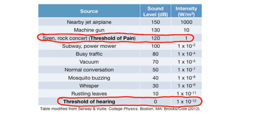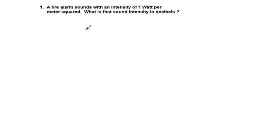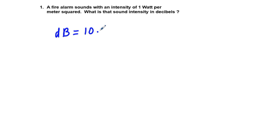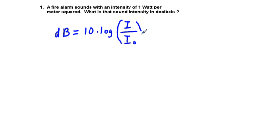With that, we'll go on to our exercises. Problem 1: a fire alarm sounds with an intensity of 1 watt per meter squared. What is that sound intensity in decibels? We bring up the formula, which is dB — sometimes written as beta, the unit notation for decibels — equals 10 times the common logarithm, or log base 10.